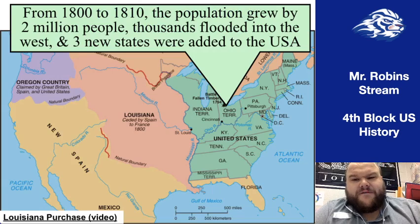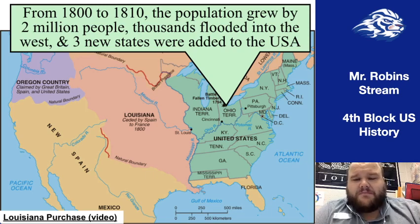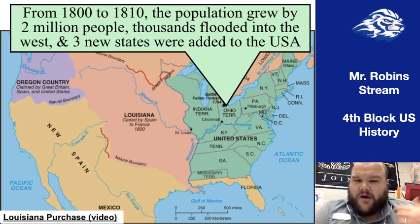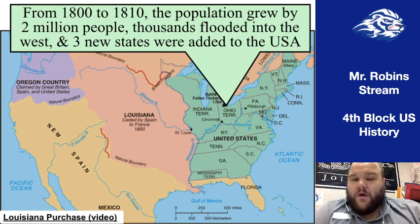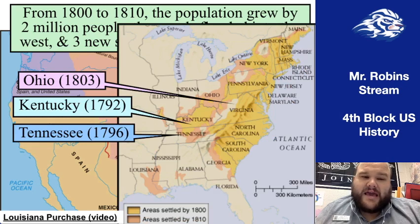Moving on from court stuff to talk about population: during Jefferson's time as president, we have huge growth in population — about 2 million people from 1800 to 1810. A lot of this is natural growth, not a ton of immigrants, but Americans having bigger and bigger families. Therefore, we're starting to see a large movement west into what today we'd call the Midwest — places like Ohio, which becomes a state in 1803; Kentucky, which becomes a state in 1792; and Tennessee, which becomes a state in 1796.